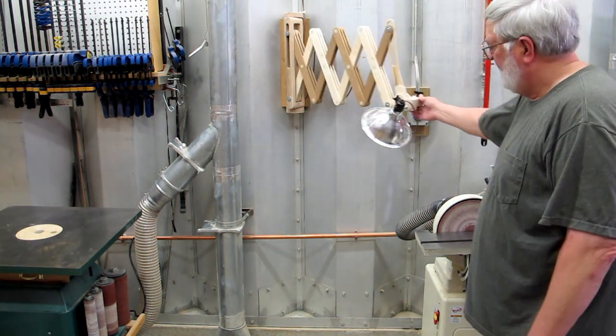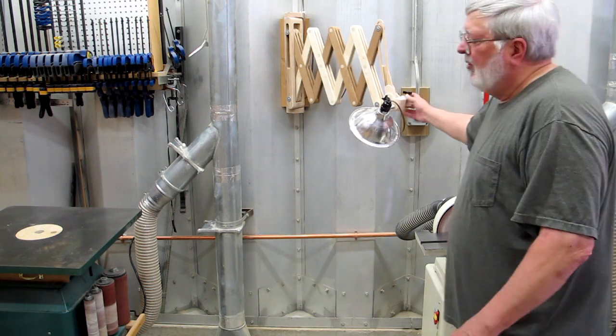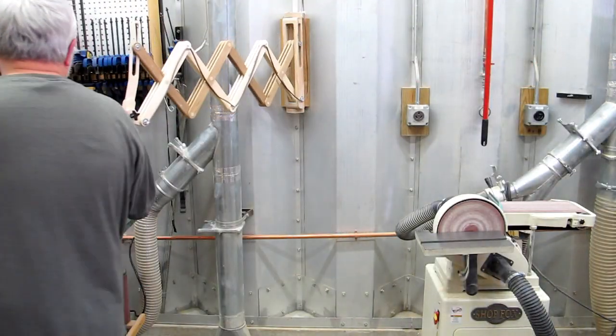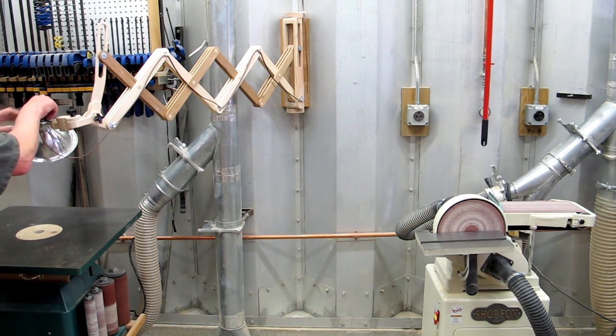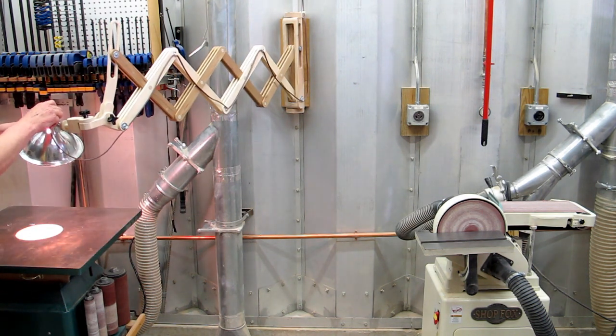When you're done, get it out of your way. Bring it over to the reciprocating sander, reposition the light wherever you want it.